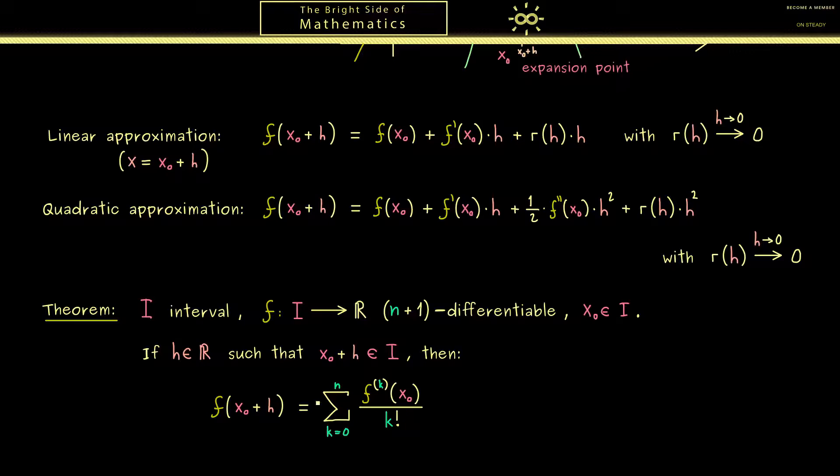Also you should note that we don't see the k factorial at the first two terms here. Because for k equals 0 and k equals 1 we just get the factor 1. However at k equals 2 we see 1 half. And this means the next factor will be 1 sixth. Now you might ask how this factor comes in and I can tell you we will see it in the proof soon.